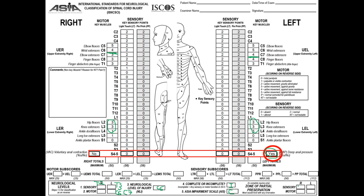Do we need to specify the zone of partial preservation? We check — voluntary anal contraction is a no — so yes, we need to specify the motor zone of partial preservation. On the right it's L5, and on the left it's L4, the most caudal segment with any type of motor function. For the sensory zone of partial preservation, since we have deep anal pressure, the sensory zone is NA on both the right and left.